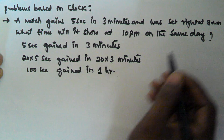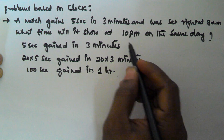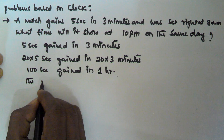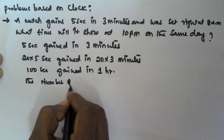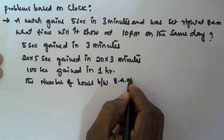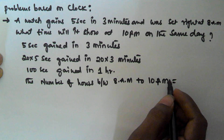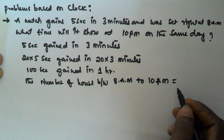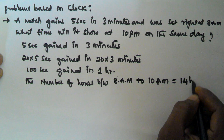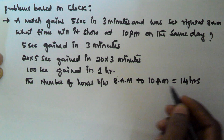The watch is set at 8 am and we have to find what time it will show at 10 pm. The number of hours between 8 am and 10 pm: from 8 am to 8 pm is 12 hours, plus 2 more hours to 10 pm, so total 14 hours.